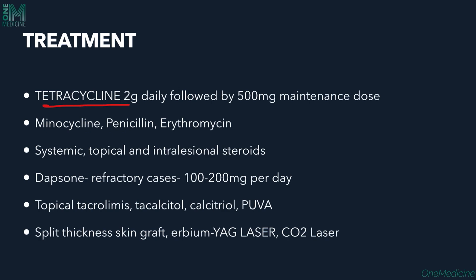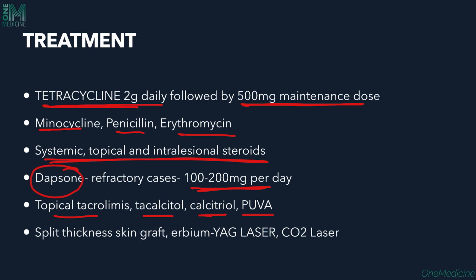For treatment, tetracycline 2g daily followed by a 500mg maintenance dose can be given. Minocycline, penicillin, and erythromycin can also be tried. Topical, intralesional, and systemic steroids have been used in acute cases. Dapsone 100mg per day can be tried in refractory cases, but blood parameters must be monitored before starting. Topical tacrolimus, tacalcitol, and PUVA therapy are also options. If the skin does not heal, split-thickness skin grafting, botulinum toxin, or CO2 laser may be considered.